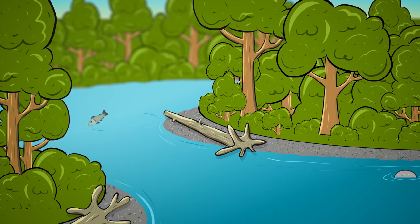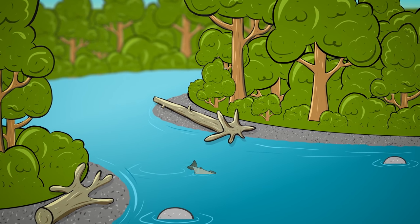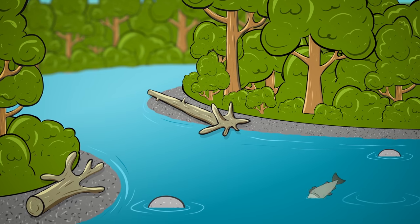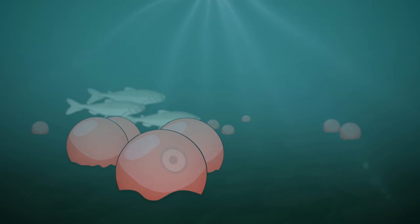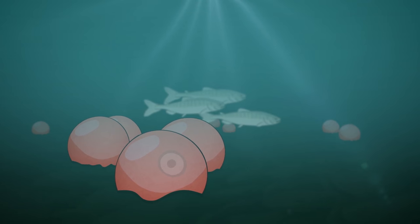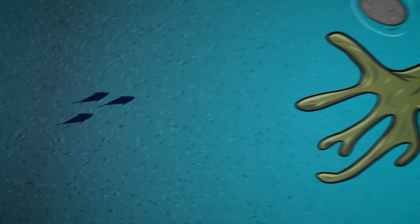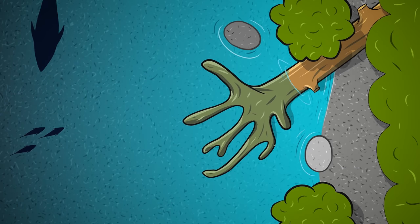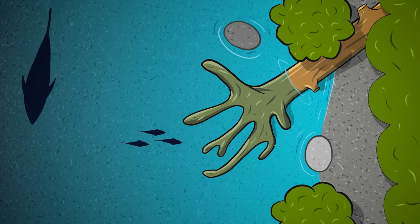Salmon are born in freshwater streams and rivers before migrating to the sea, only returning as adults to spawn the next generation. Salmon need cool, clean water to mature, and young fish need diverse stream habitat to grow, rest, and hide from predators.